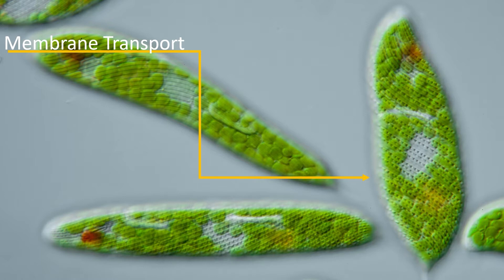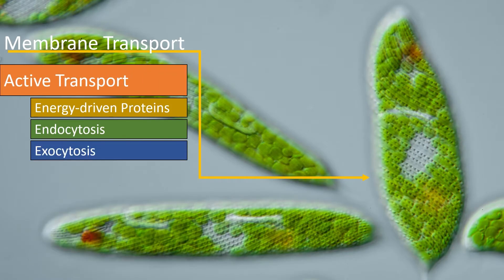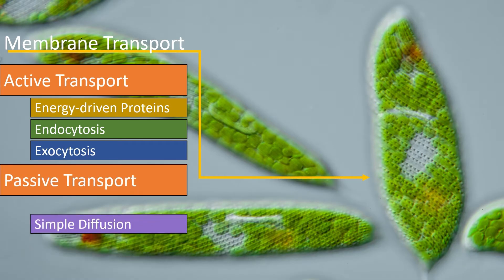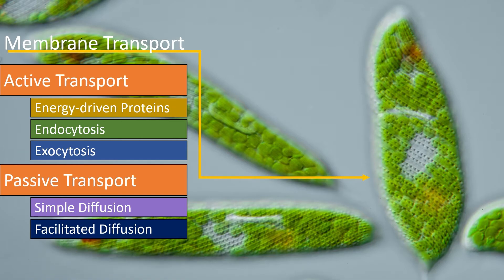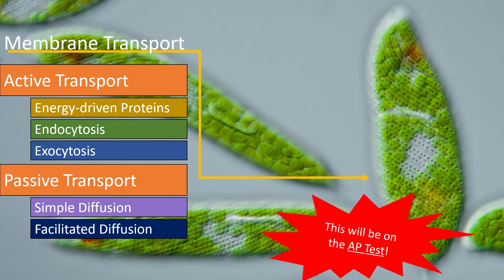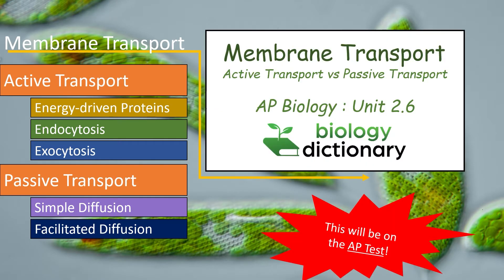Cells transfer substances across the cell membrane using two basic methods: active transport, which includes energy-driven proteins, endocytosis, and exocytosis, and passive transport, which includes diffusion and facilitated diffusion. This will definitely be on the AP test, so stick with us as we cover the basics of membrane transport, including the differences between active and passive transport.